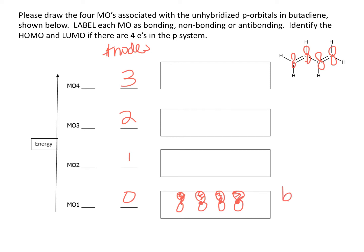This would be a bonding MO, because when I look at all the interactions, this interaction is bonding, this interaction is bonding, and this interaction is bonding. All three interactions are bonding, so it must be a bonding MO.